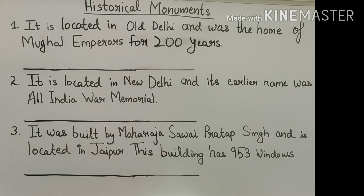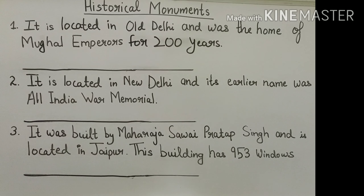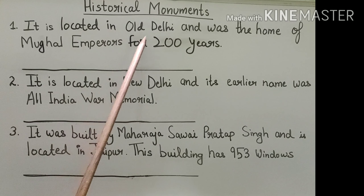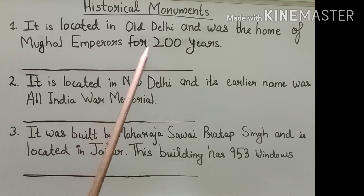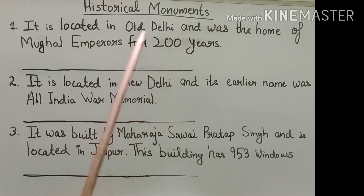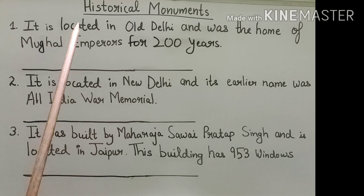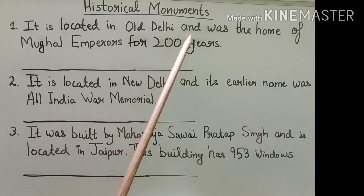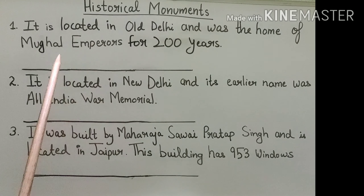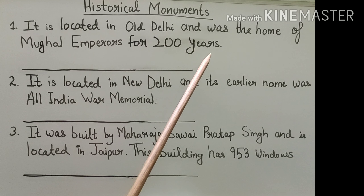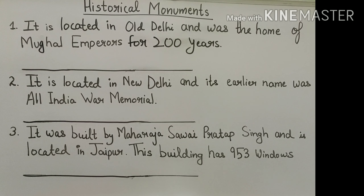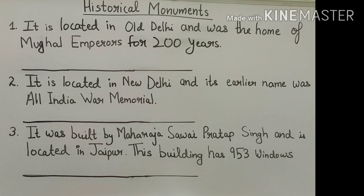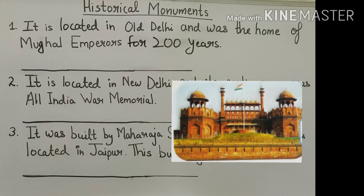Question number one: It is located in Old Delhi and was the home of Mughal emperors for 200 years. It was located in Old Delhi, and for 200 years it was the home of Mughal emperors. What is the name of that monument? The answer is Red Fort.